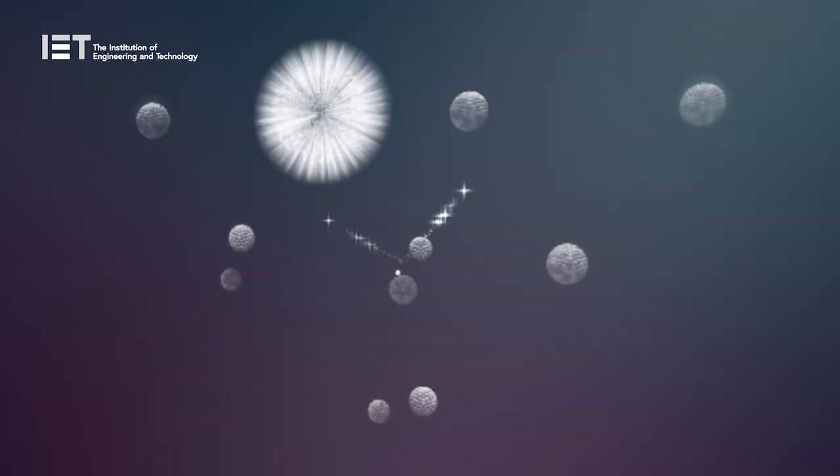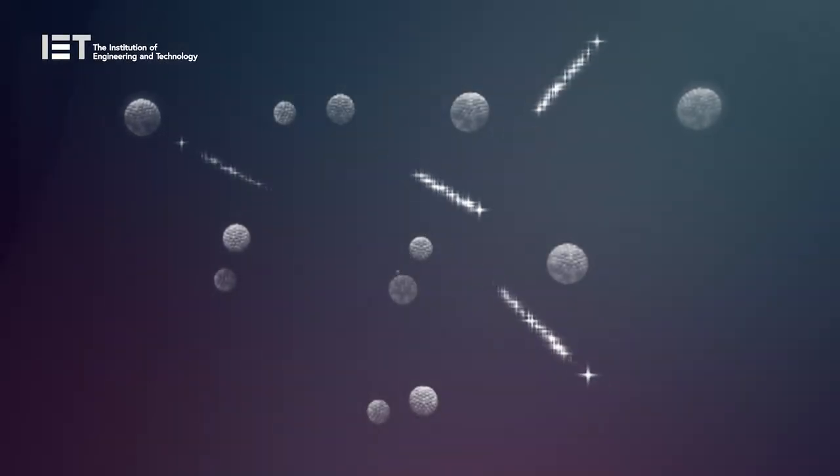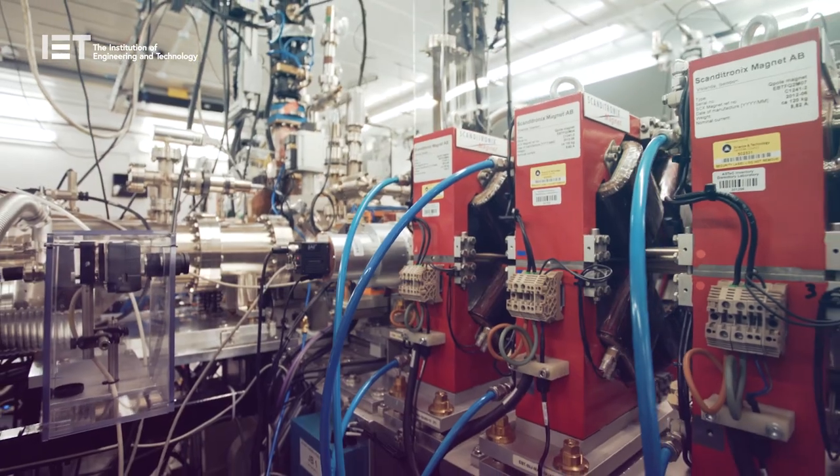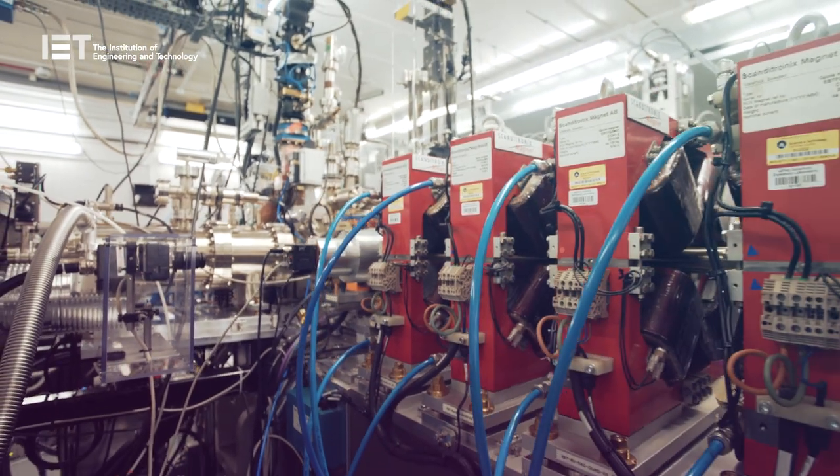X-rays are created by a process called bremsstrahlung. Electrons are accelerated to almost light speed, 0.96c, into a very dense metal, somewhat like tungsten. The electrons interact with the atoms at the centre of that, and the nucleus decelerates the electrons, and this deceleration loses energy, and that produces bremsstrahlung radiation. So that's the process that's used.